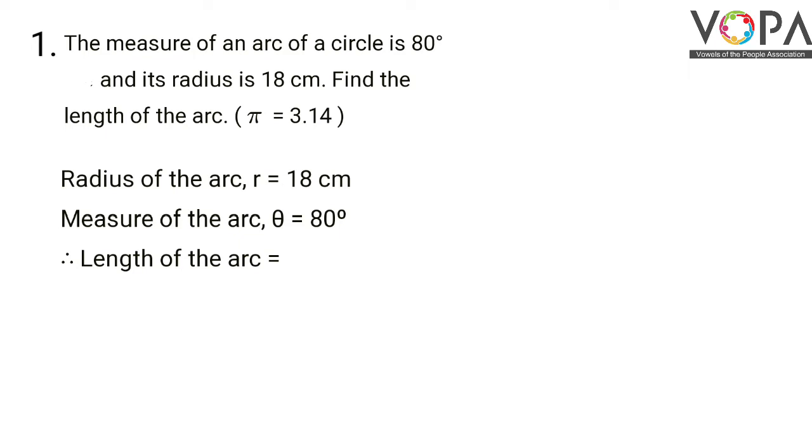So your radius of the arc R is 18 centimeters. Measure of the arc theta is 80 degrees. Therefore, length of the arc will be calculated using the formula theta divided by 360 into 2 pi R.